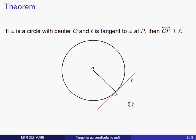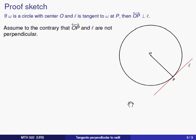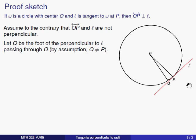We'll prove this, as we prove many things in geometry, by contradiction. We're going to assume to the contrary that the line OP and the line L are not perpendicular and try to arrive at a contradiction. Because they're not perpendicular, one thing we can say is we can definitely draw a perpendicular to L through O — this is a previous proposition.